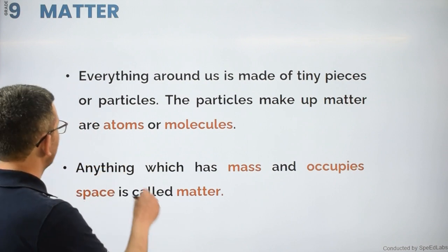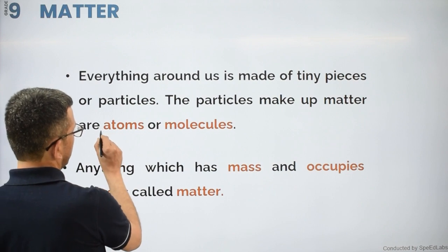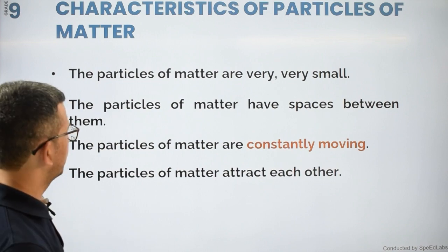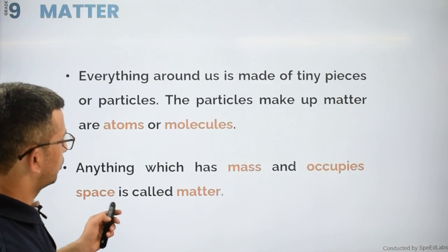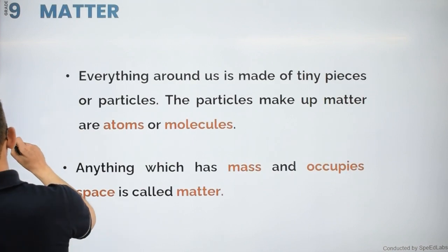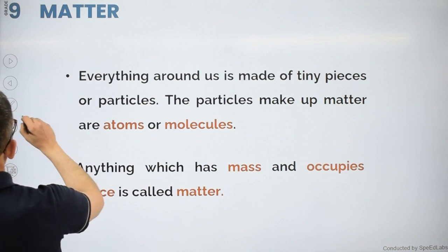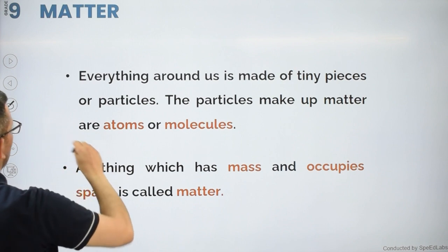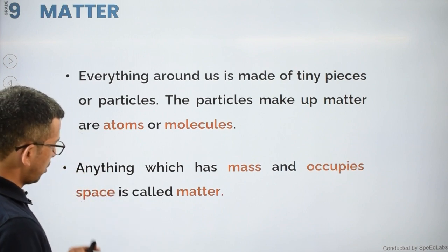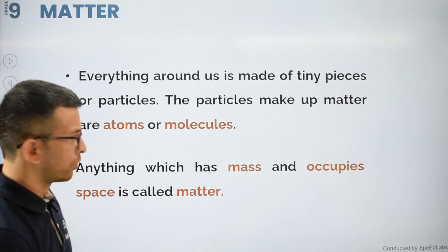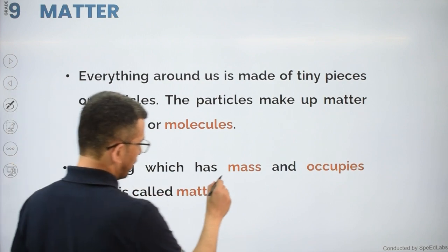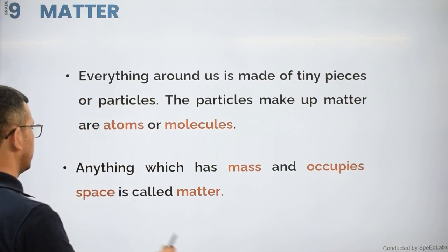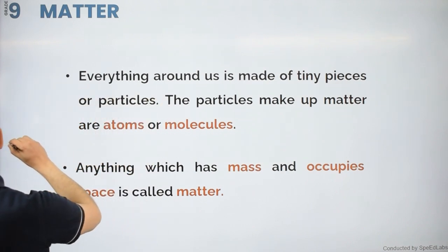Inside that matter you will find two kinds of very small particles: either atoms or molecules. First, let's understand the real meaning of matter, and then we will talk about the different characteristic properties. Matter is defined as anything which has mass and occupies space.